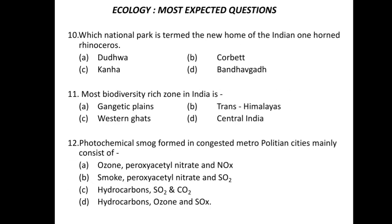Question 10: which national park is termed the new home of the Indian one-horned rhinoceros? The correct option is A — Dudhwa. Question 11: the most biodiversity-rich zone in India is — four options are provided: Trans-Himalaya, Western Ghats, and Central India. The correct option is C — the Western Ghats is the richest biodiversity zone in India.